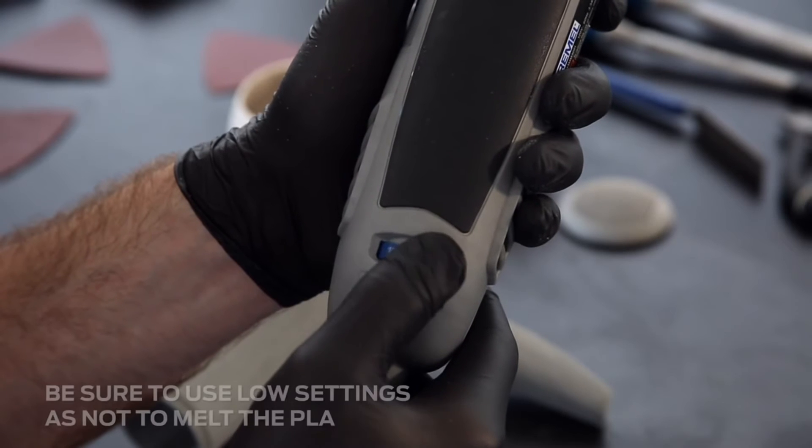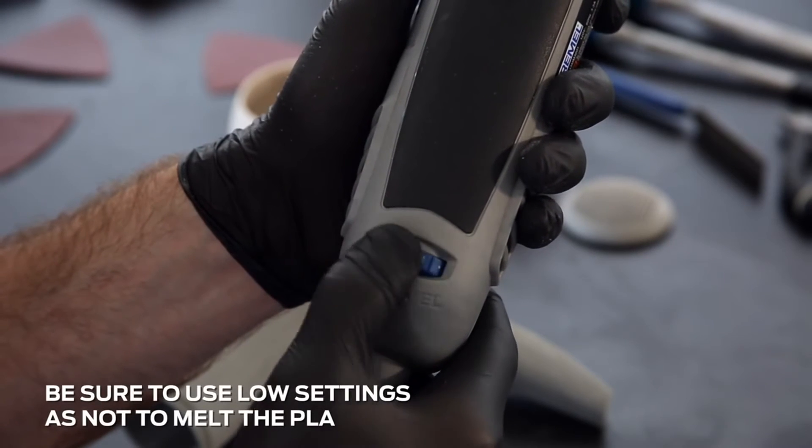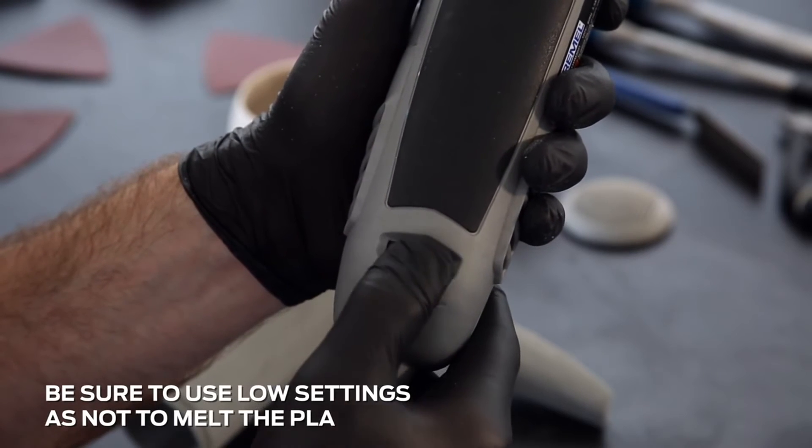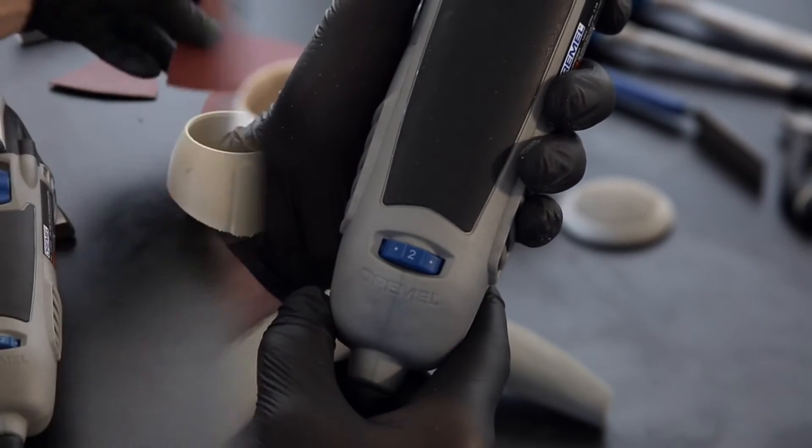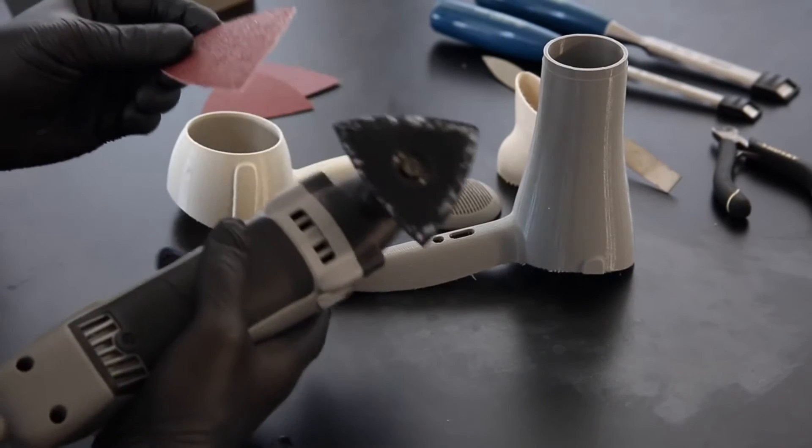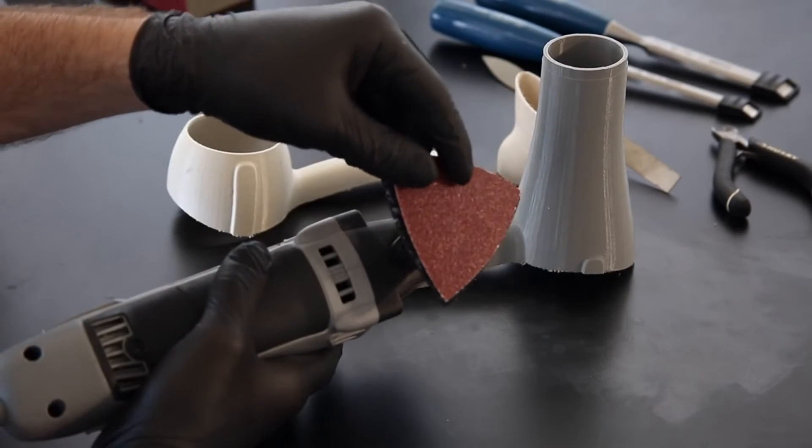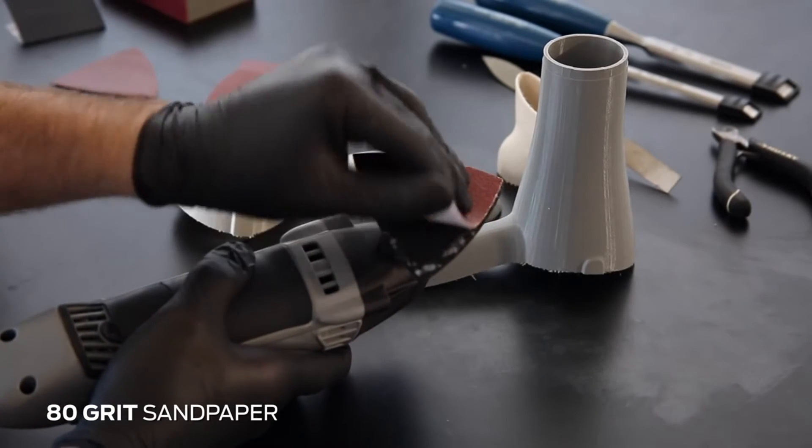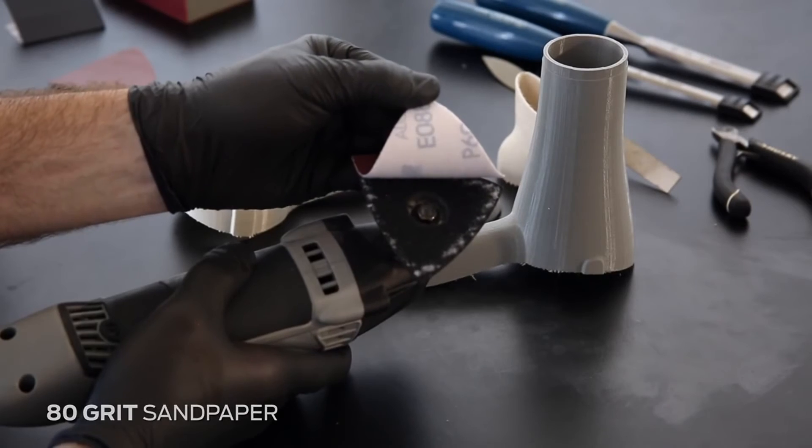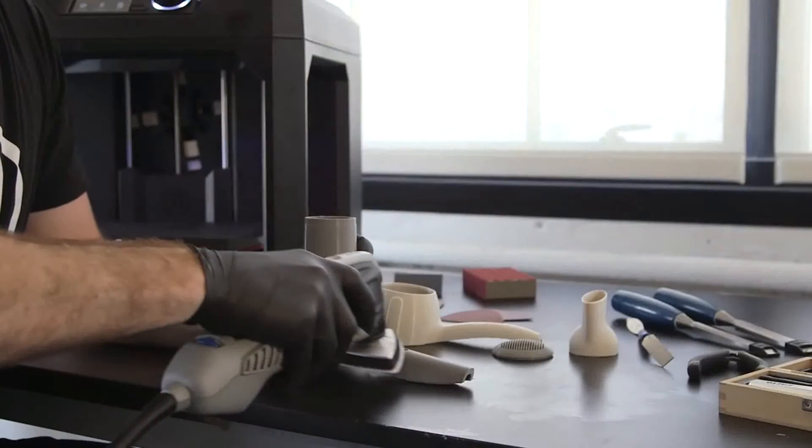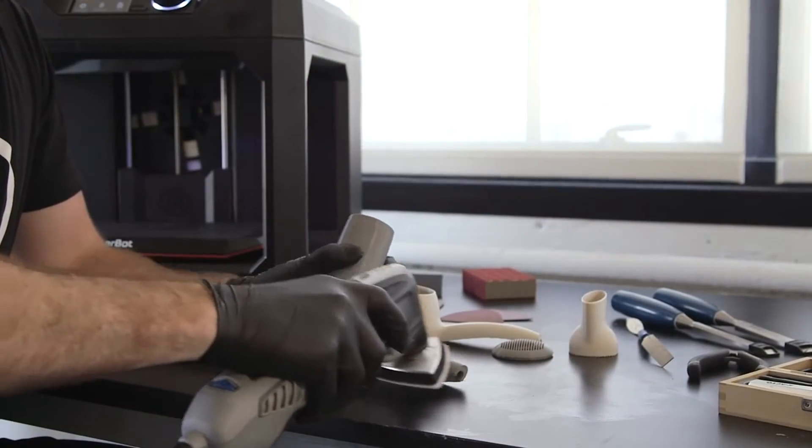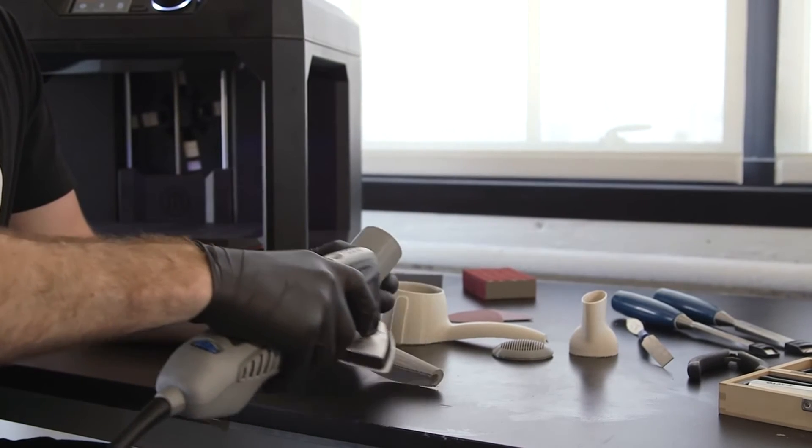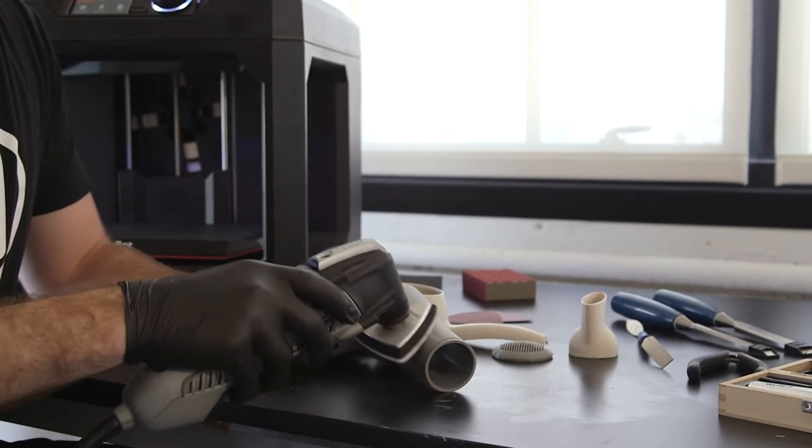Now that all support material has been removed, you can begin the sanding process. Sanding will produce small particles of filament, so wear a respiratory mask. Start with 80 grit sandpaper. When sanding with coarse sandpaper, you're creating the surface you'll later refine. This stage of sanding should remove the most material and create a fairly uniform surface.